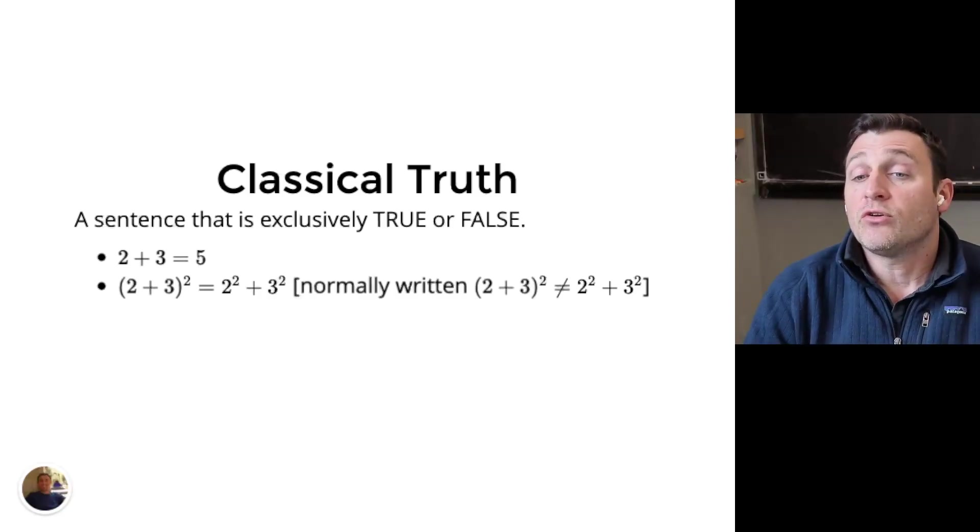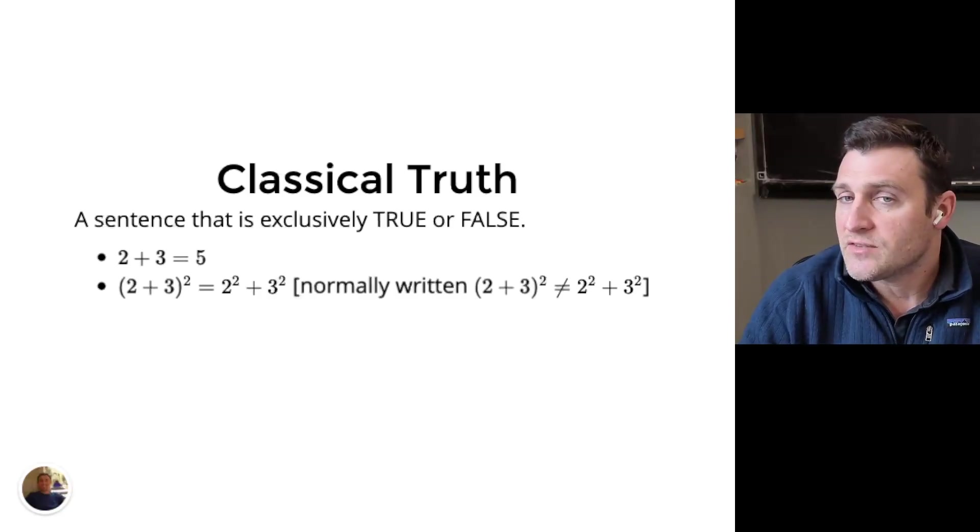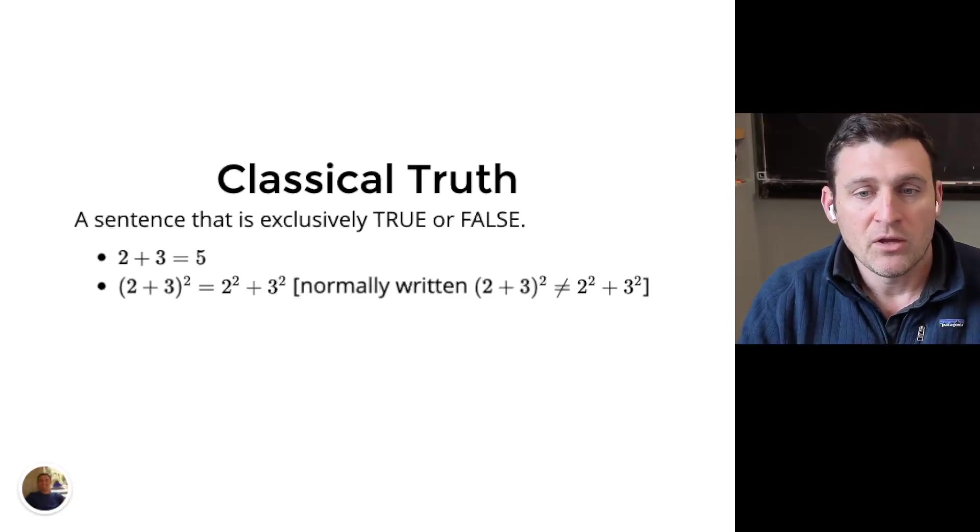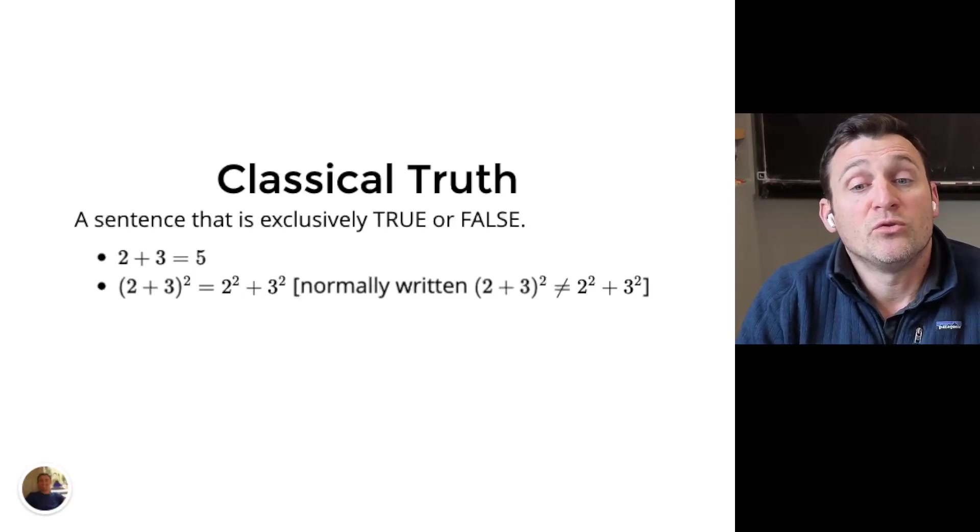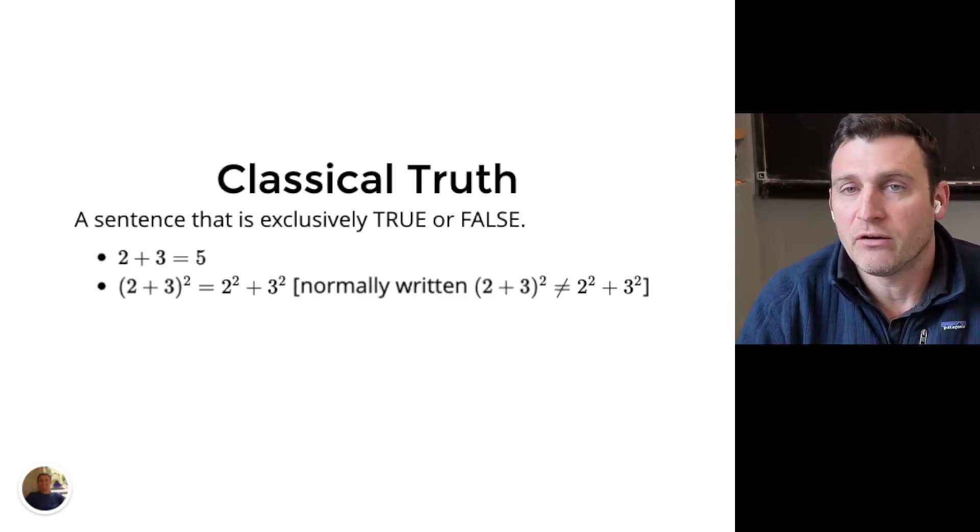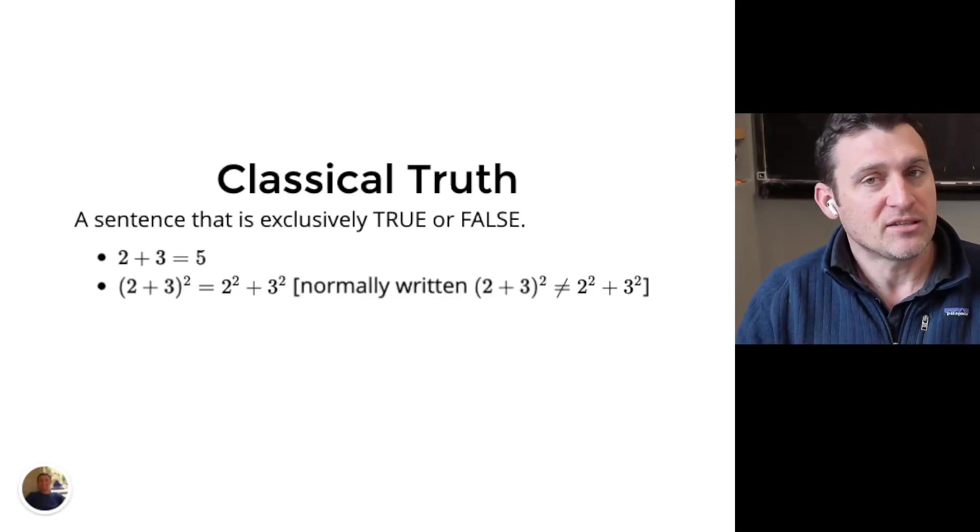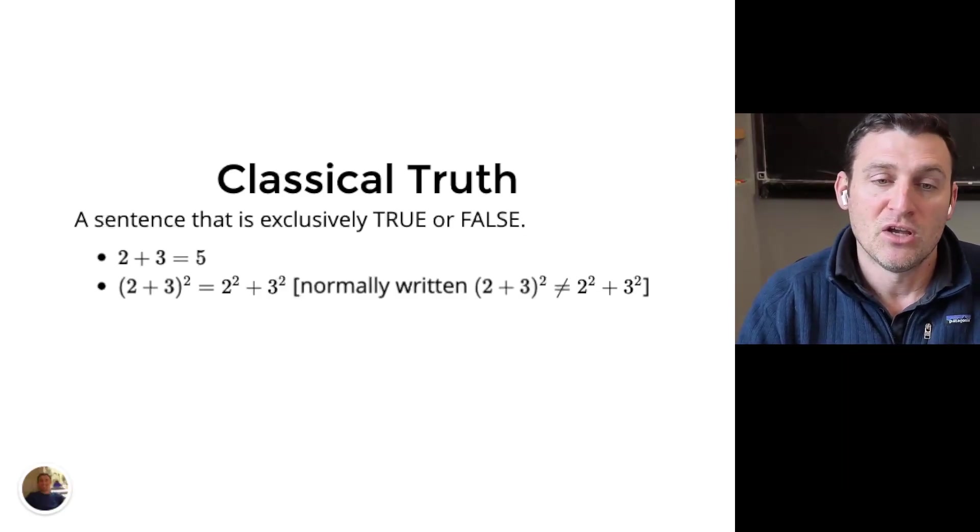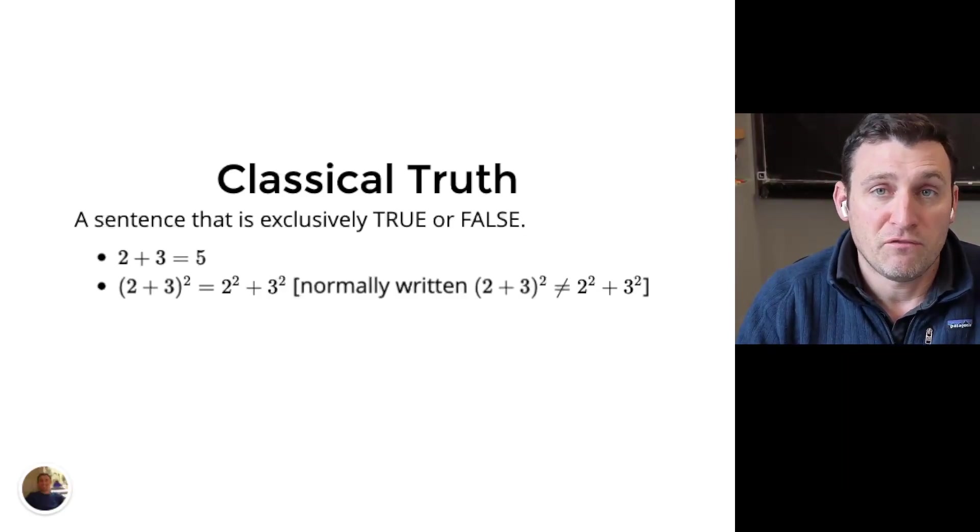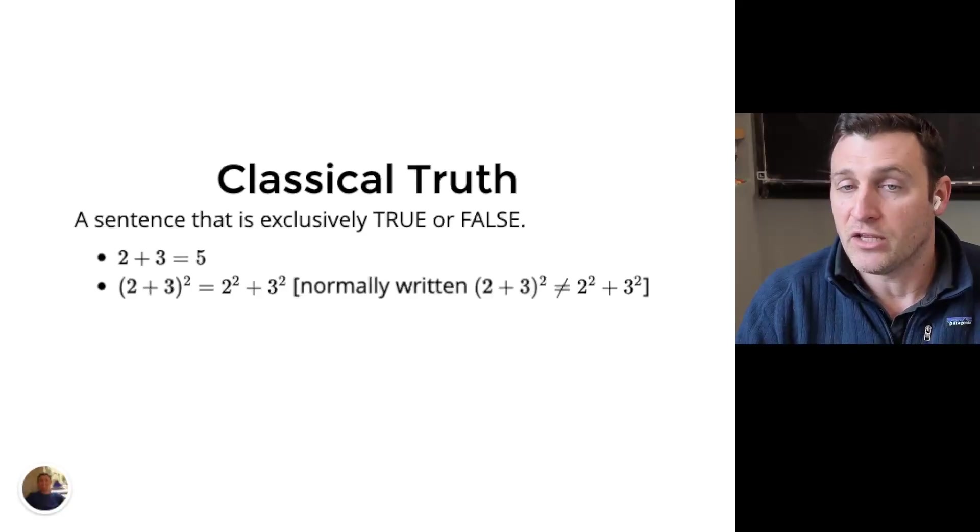For example, the quantity two plus three squared equals two squared plus three squared. Now we know that isn't true. Two plus three squared is really five squared or 25. On the other side, two squared is four, three squared is nine, four plus nine is 13, which is not 25. So here we've written a sentence and we've judged it. It turned out to be false. That's still allowed in classical logic. Here we would say it's just not equal.